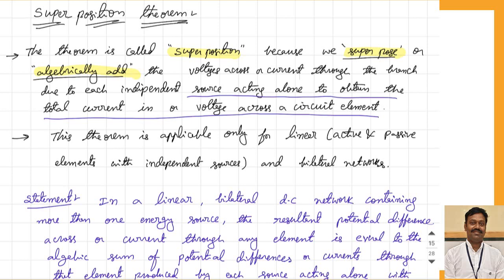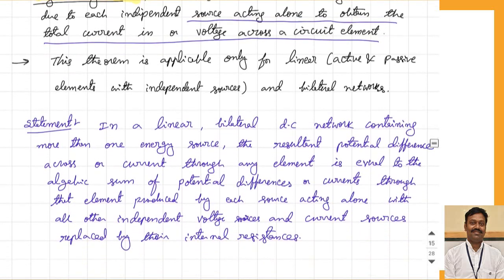Superposition means we are taking one source at a time, and using that source we will find what is the response across a particular element. That response can be either a voltage or a current — that means current through that element or voltage across the element, as asked in the numerical. Each source we will check separately, then we will take the algebraic sum of the effect due to all the individual sources. That is why it is called superposition.